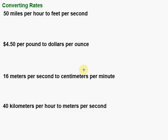In this video, we're going to take a look at converting rates from one set of units to another. The first thing we need to do is start by setting up the rate we're given as a ratio, or as a fraction. So I'm going to start with 50 miles per hour, and we want to convert that to feet per second.